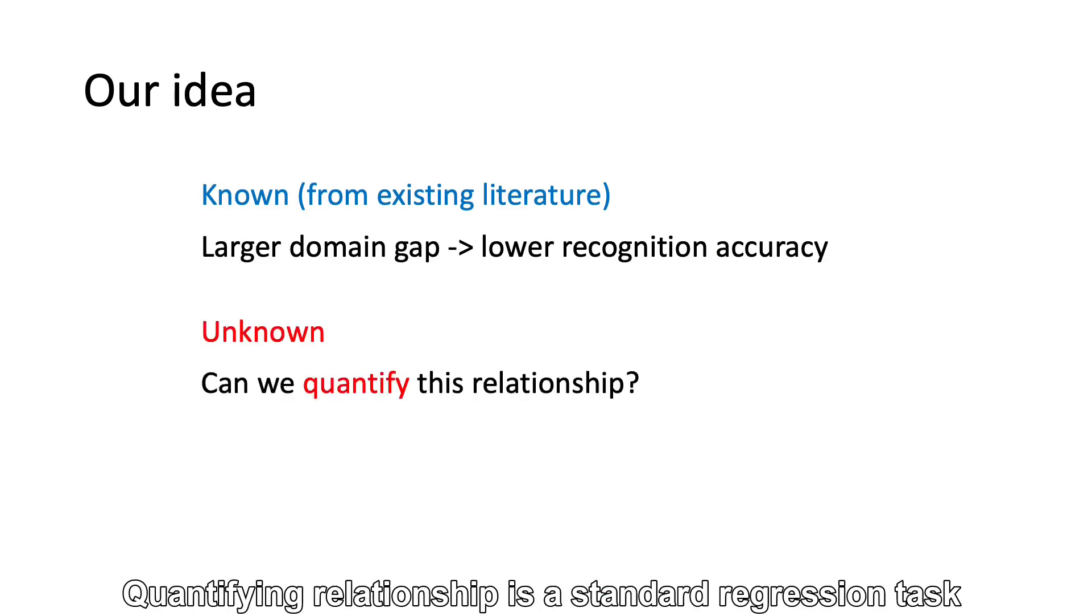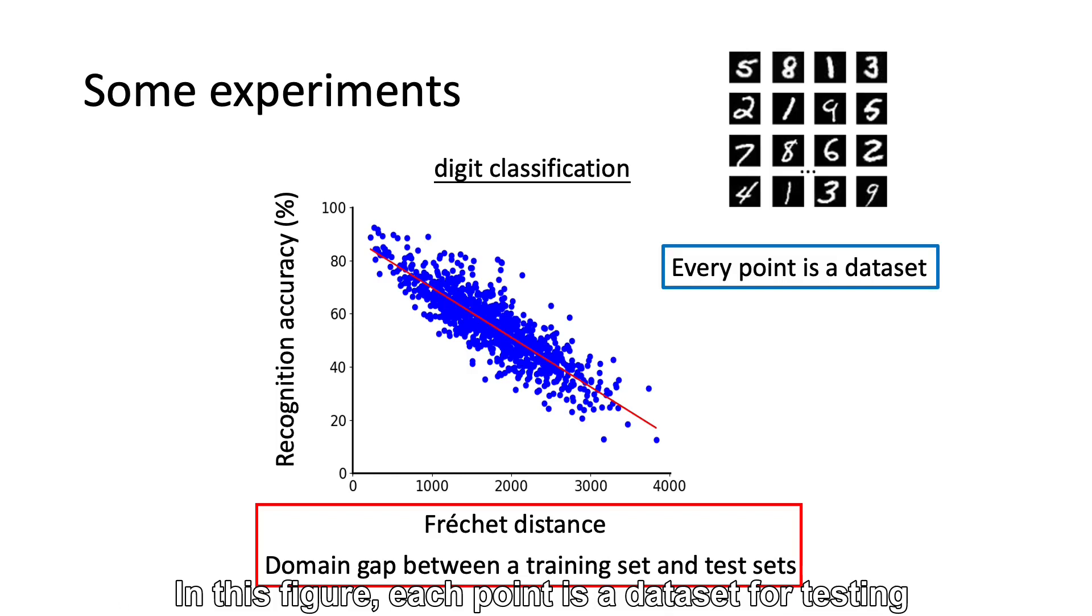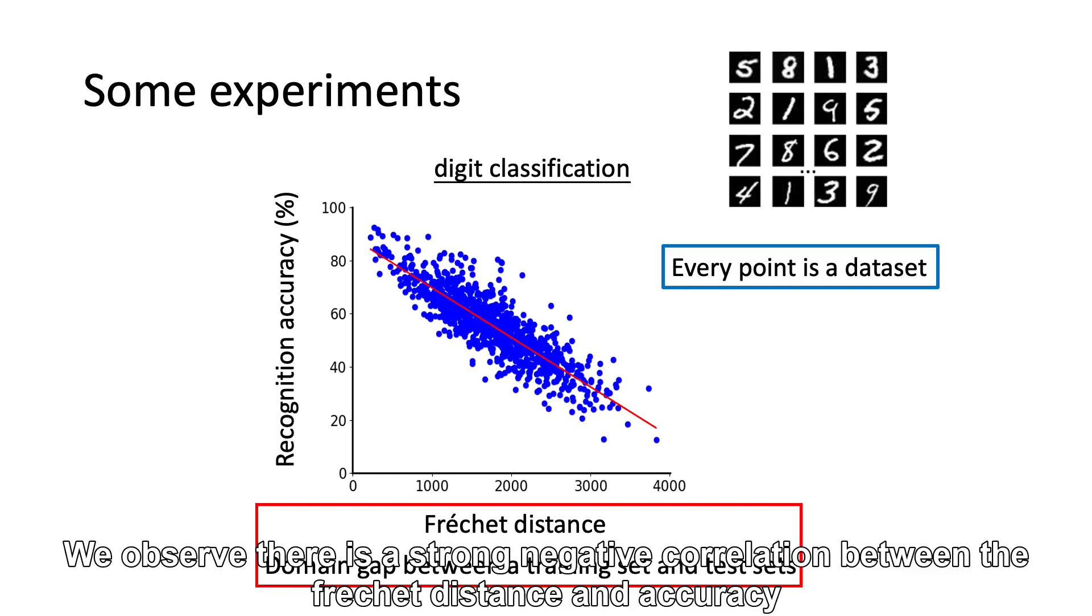Quantifying relationships is a standard regression task. We first conduct experiments on digit classification. In this figure, each point is a dataset for testing. We use Fréchet distance to measure the domain gap. We observe there is a strong negative correlation between Fréchet distance and accuracy.